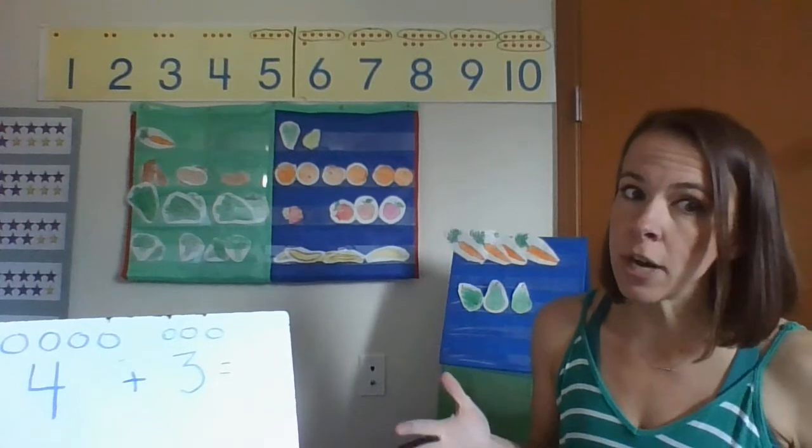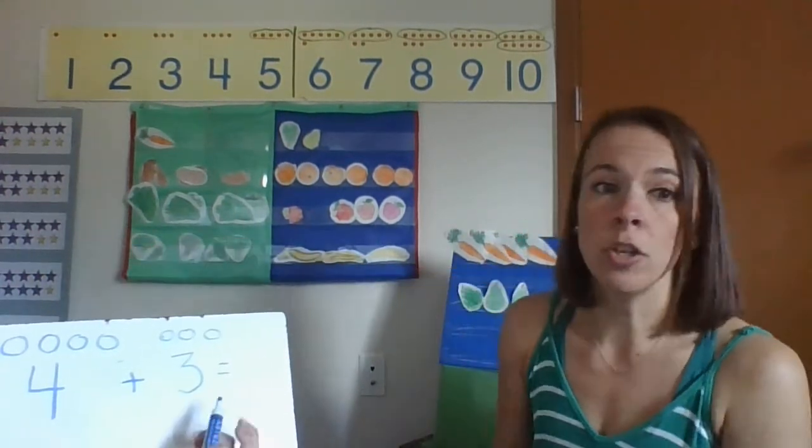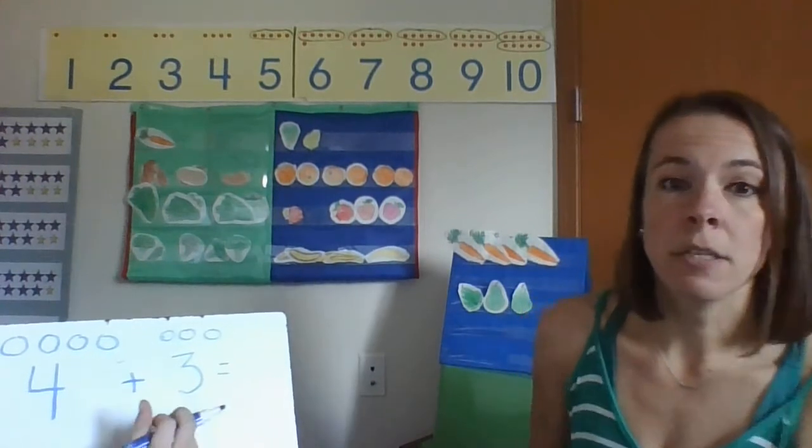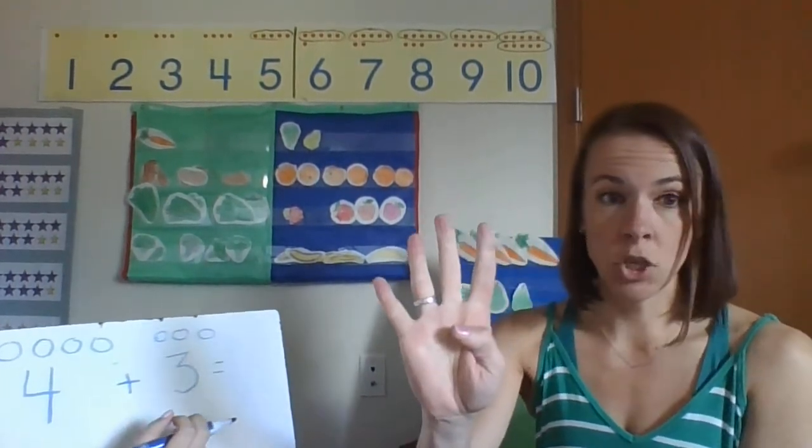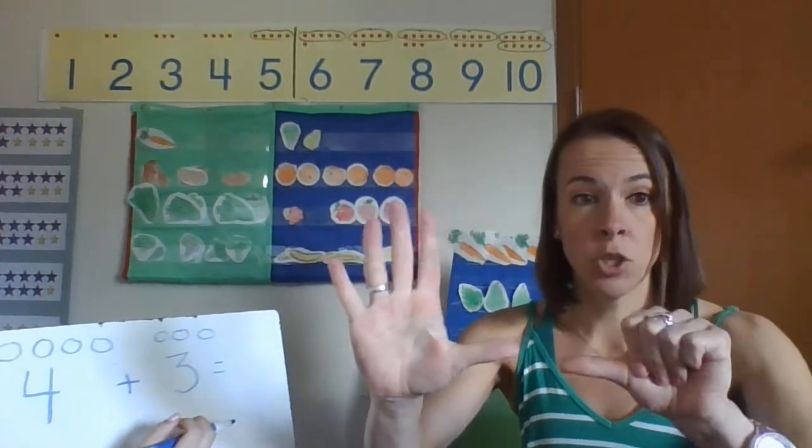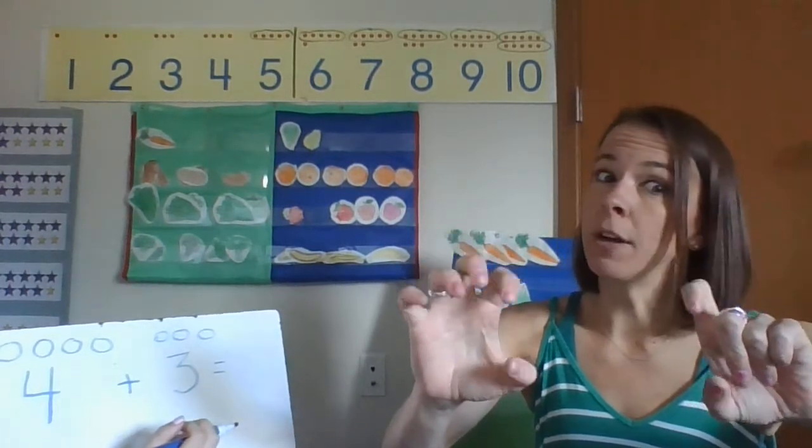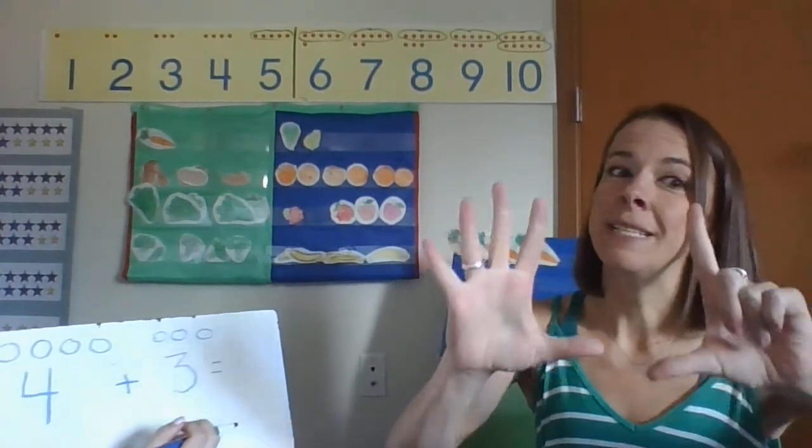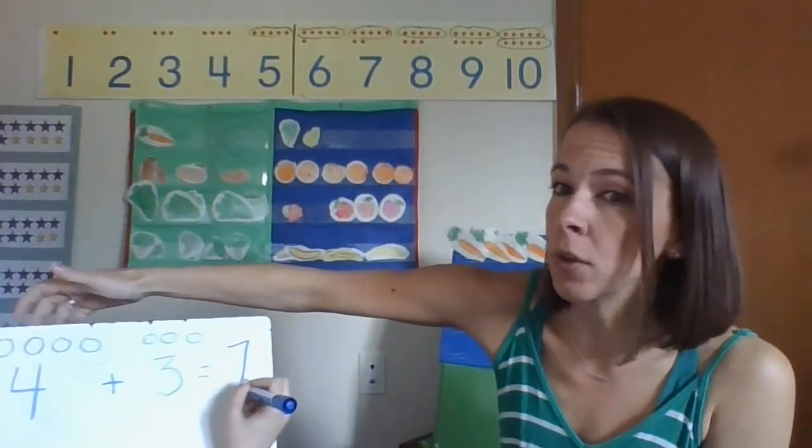And then she's going to use her strategies, either memorizing or counting the circles or finger calculators. So if she's using her finger calculator first, she's going to put up four. Then she's going to count three more. One, two, three. What's her total? Seven. You got it.